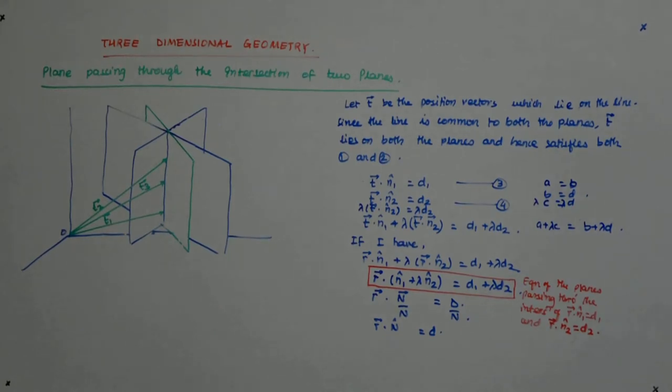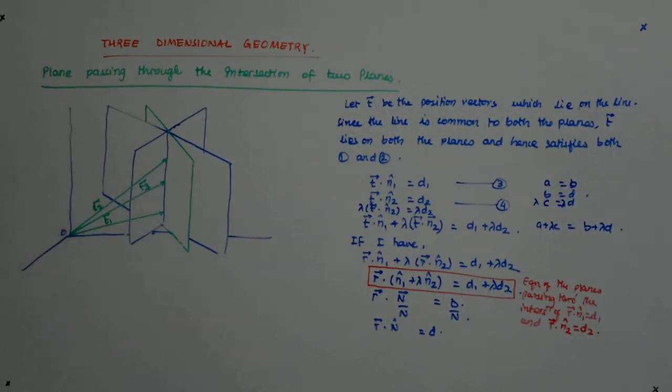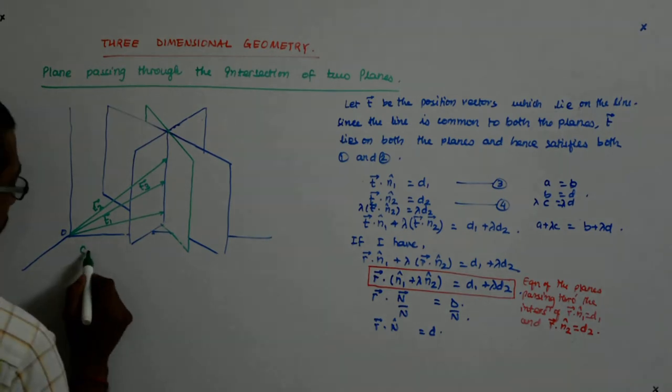Okay. Now, I would like to convert this into the Cartesian form. So I have left the whole thing like that. So how do I get the Cartesian form out of it?